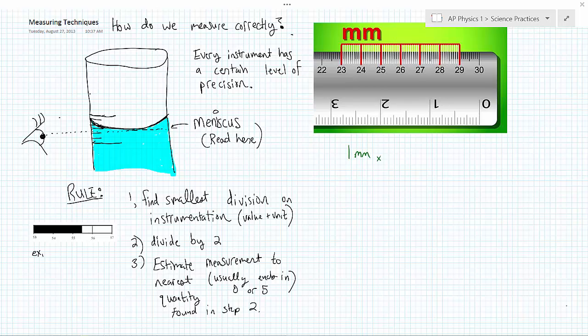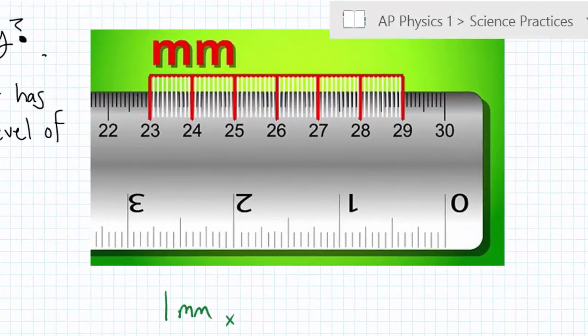So I have a couple different examples here. Let's say I have my ruler. We'll start there. And on this ruler, I have centimeters, 23, 24, 25. Each one of those centimeters is divided up into 10 millimeters. So 1 millimeter is the smallest division.